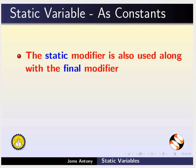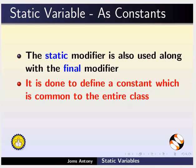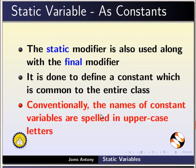Come back to slides. The static modifier is also used along with the final modifier. It is done to define a constant which is common to the entire class. Conventionally, the names of such constant variables are spelled in uppercase letters.